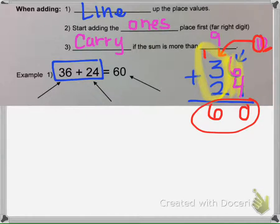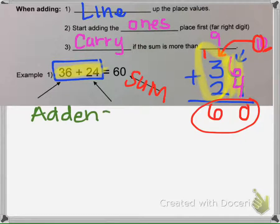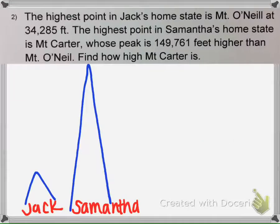So the answer we get for some more vocab here is called the sum. The answer we get is called the sum, and the numbers that we add together, the 36 and the 24, are called addends.